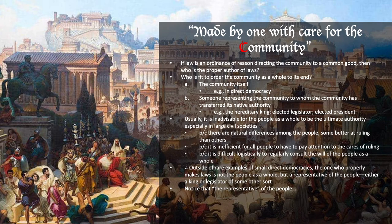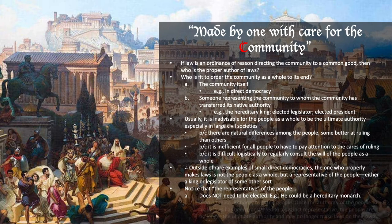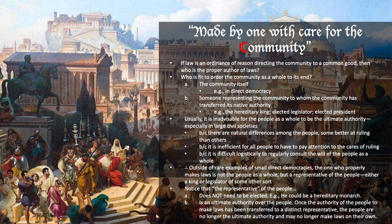Notice that the representative of the people does not need to be elected — he could be a hereditary monarch, which is perfectly compatible with being said to represent the people. Notice also that the representative of the people is an ultimate authority over the people. Once the authority of the people to make laws has been transferred to a distinct governing body, the people are no longer the ultimate authority and may no longer make laws on their own, because they've transferred that authority to a distinct governing body.